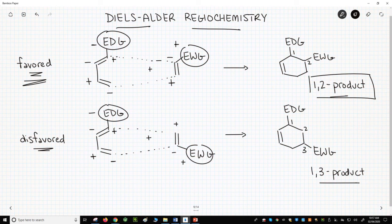That's how you can quickly predict regiochemistry in the Diels-Alder reaction. Identify the R groups as EWGs or EDGs. Assign imaginary charges. And then line up the ends so that the plus matches minus and minus matches plus.